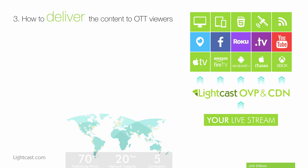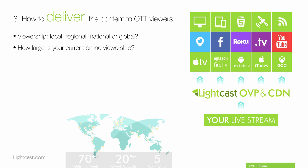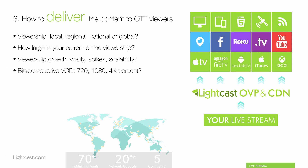We need to ask ourselves, as media publishers, where is our viewership coming from? Is it a local, regional, national, or global viewership we're trying to attract? How large is our current online viewership? If you already publish video on your website, look at the statistics and try to gauge what your expected OTT viewership might look like once you launch your TV apps. Try to anticipate virality, spikes, and scalability for upcoming live events. If you intend to stream live events, make sure you have plenty of bandwidth power, server power, and failover solutions in your CDN ready to go.